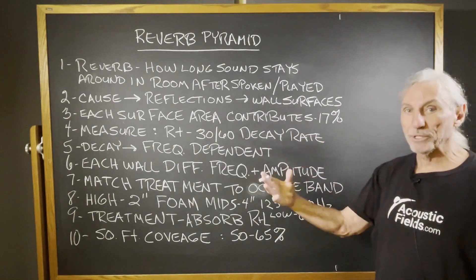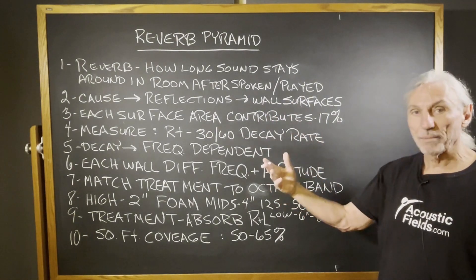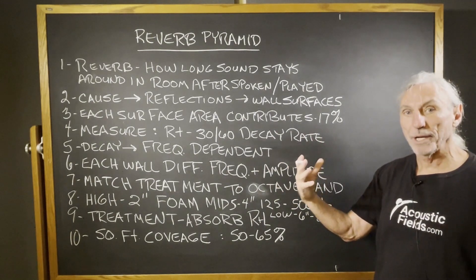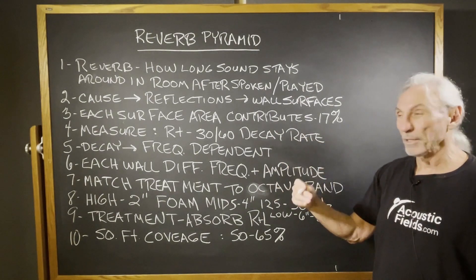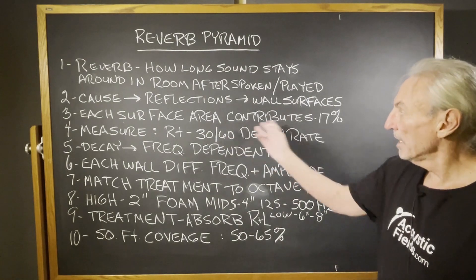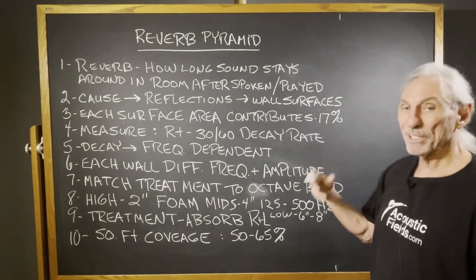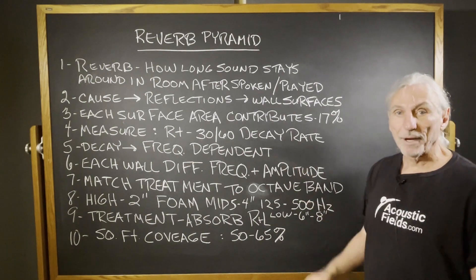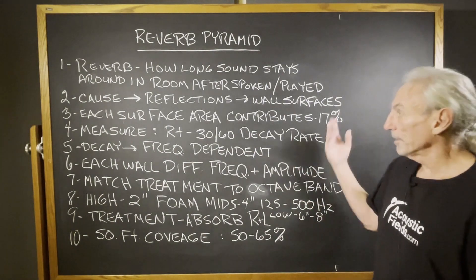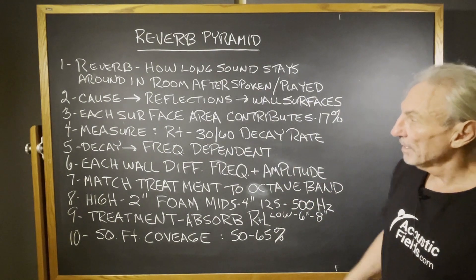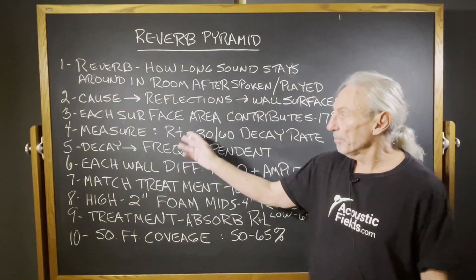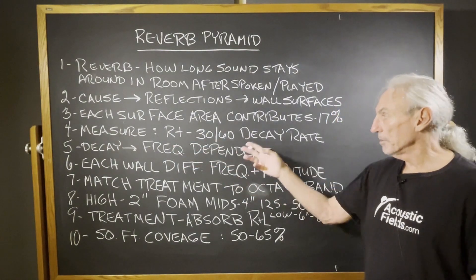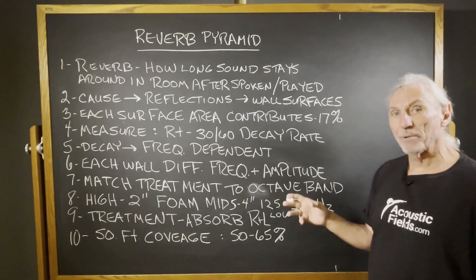Just for purposes of discussion — this may or may not be an accurate number — I want you to visualize the problem first and then we can talk about solutions. Each surface area is about 17 percent. You take six surface areas in a room, divide into 100, and you get around 17 percent. The numerical value we use for reverberation is the RT60 — 30 and 60 — which is really a decay rate.